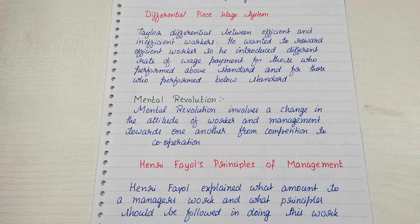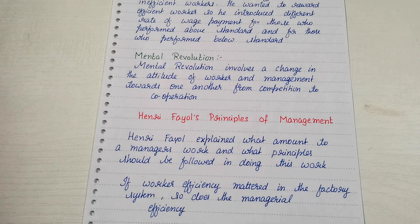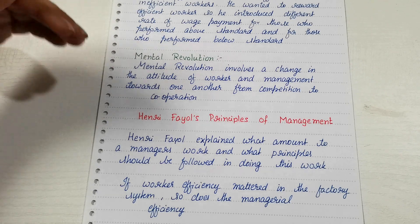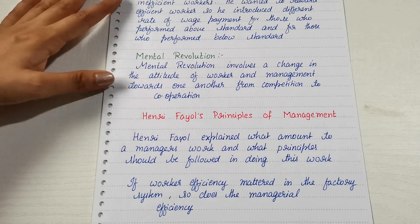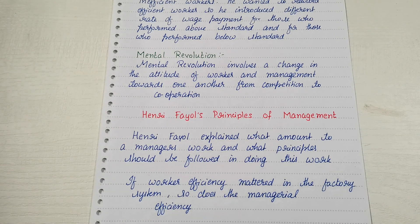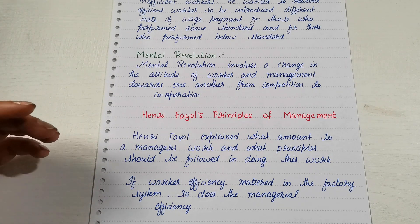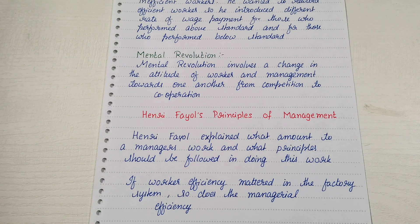The last important thing given by F.W. Taylor was Mental Revolution. Mental Revolution is the change in the minds of the employer as well as the employee — meaning all workers should support middle level and top level management to achieve their objectives. At the same time, the administrative and top level should understand and have a harmonized relationship with the laborers so that laborers can also get security.